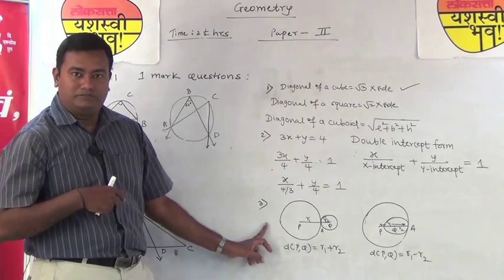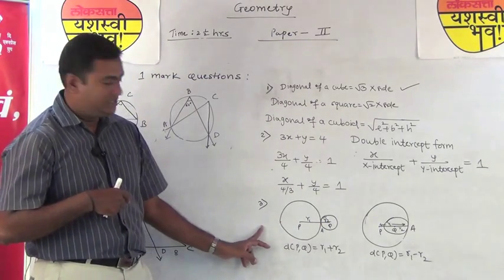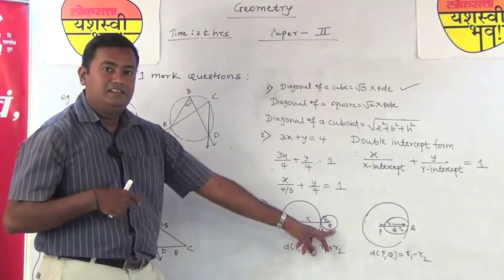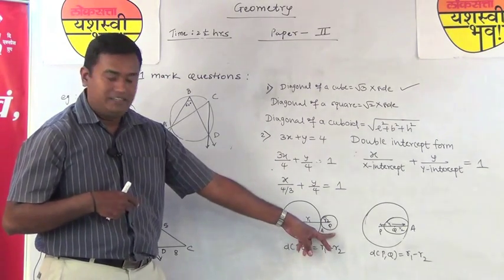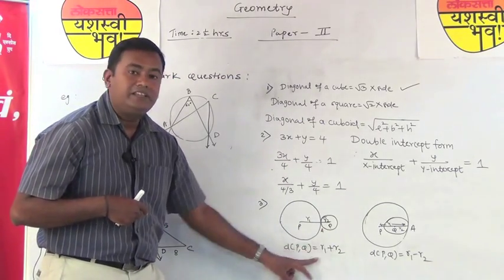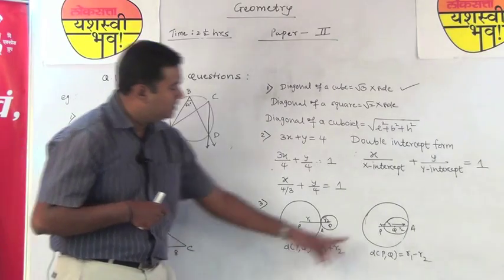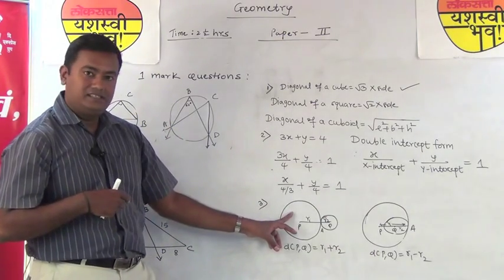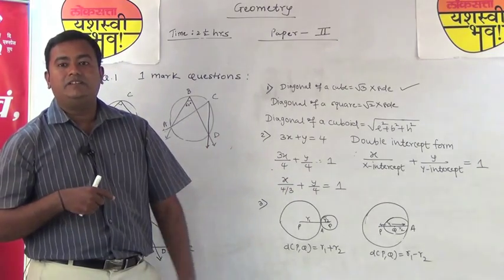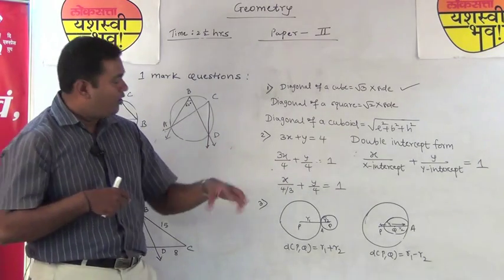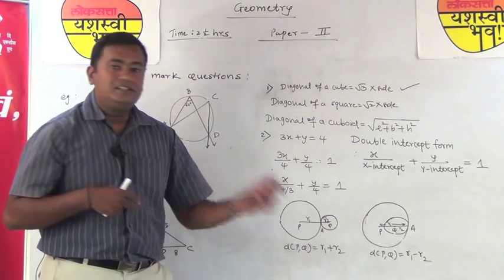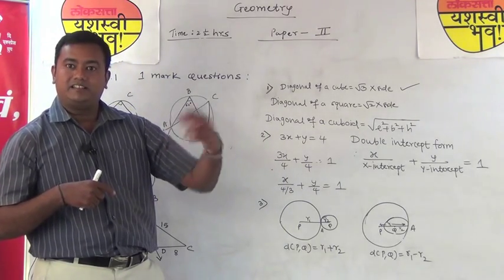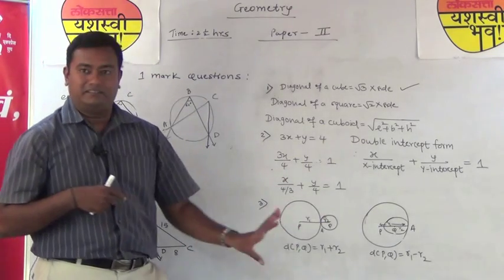There are 2 properties for touching circles: if 2 circles touch each other externally, the distance between their centers equals the sum of the radii; if they touch internally, the distance equals the difference of the radii. Questions can ask you to find the distance between centers given the radii, or to state whether circles intersect internally or externally based on given radii and distance.